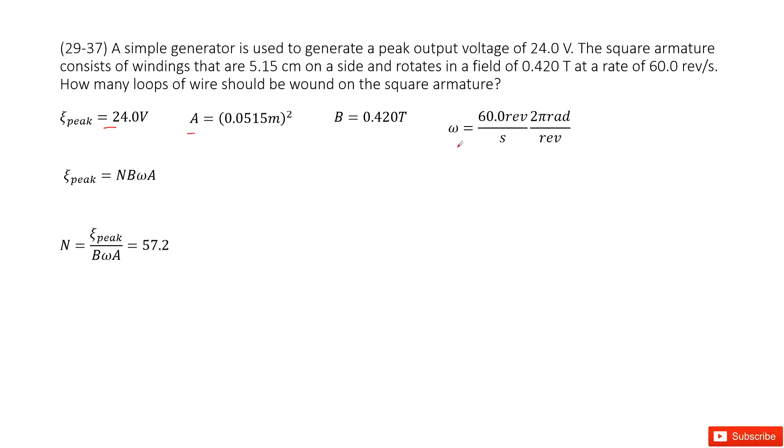And magnetic field is given, angular velocity is given. Now we need to find how many turns, how many loops of wire are in this generator.